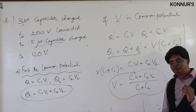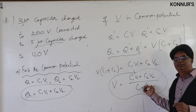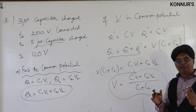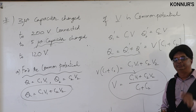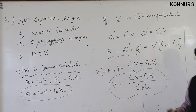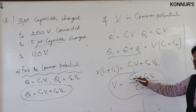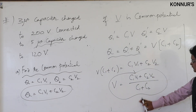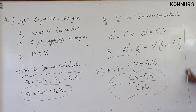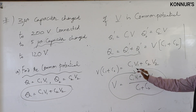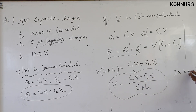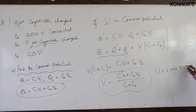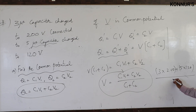This expression is analogous to the common velocity in a perfectly inelastic collision: V_common = (m1v1 + m2v2)/(m1 + m2). For this problem: C1 = 3 microfarad, V1 = 200 V, C2 = 5 microfarad, V2 = 120 V, so denominator C1 + C2 = 8. Please substitute and calculate.